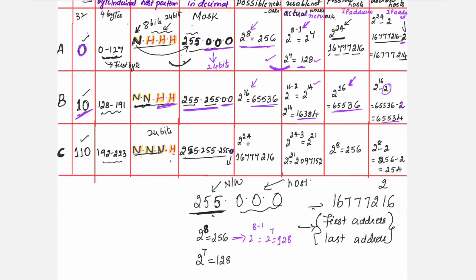For Class C, the first 24 bits denote the network portion, so the default mask is 255.255.255.0. There are 2 to the power of 24 possible networks, but subtracting 3 bits for class indication gives 2 to the power of 21, which is 2,097,152 actual networks. Host bits are only 8 in Class C, so 256 addresses are possible in each network, and removing 2 gives 254 usable host addresses.